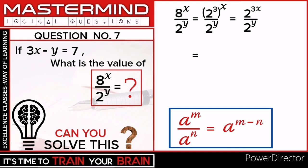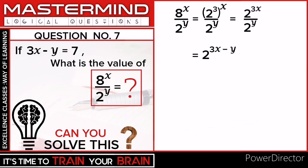So here we get 2 raised to 3x minus y. Now put the value of 3x minus y that already given in question. So here we have 2 raised to 7.